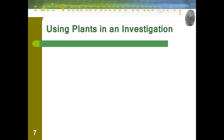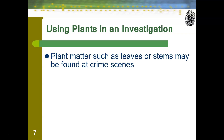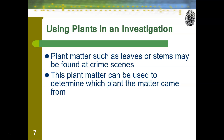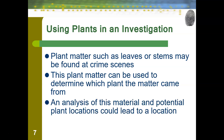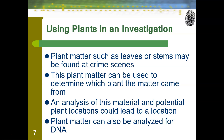The main focus of these notes is pollen, but sometimes we do just find plant matter. Plant matter such as leaves or stems may be found at crime scenes — on a body, for example. This is relatively easy to analyze because we can use that plant matter to determine which plant it came from, since every plant's leaves have a different size, shape, color, and texture. An analysis of that material could lead to potential plant locations and therefore a location for the crime. Additionally, plant matter can be analyzed for DNA, just like humans, to determine where that specific plant is.